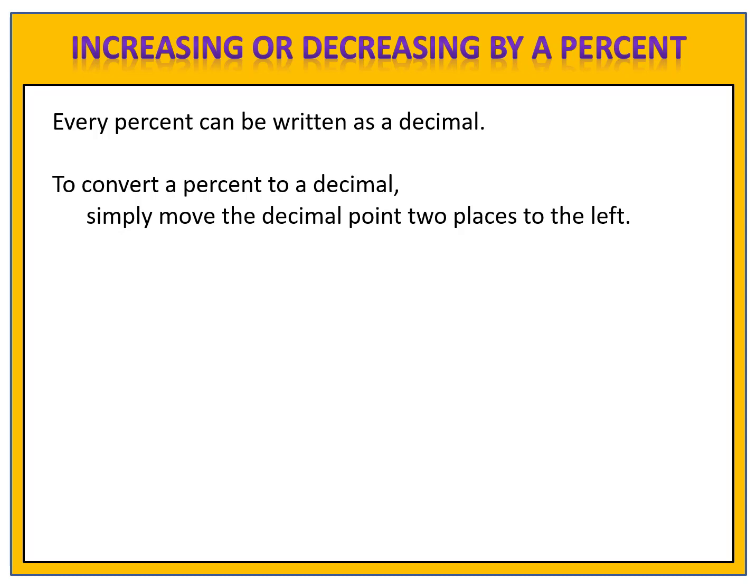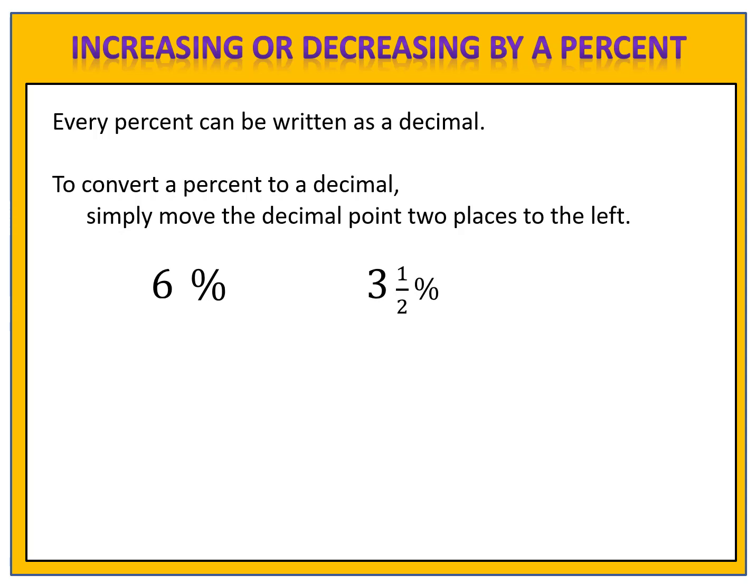Here's another one for you to try: 6% and 3.5%. See if you can convert these to decimals. For 6%, we add the decimal point since there is no decimal point already written. We then move our decimal two places to the left. Notice we have to add an additional zero in front. Written as a decimal, 6% is 0.06.